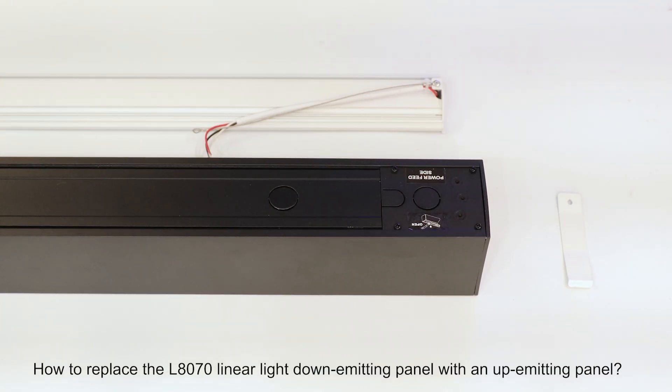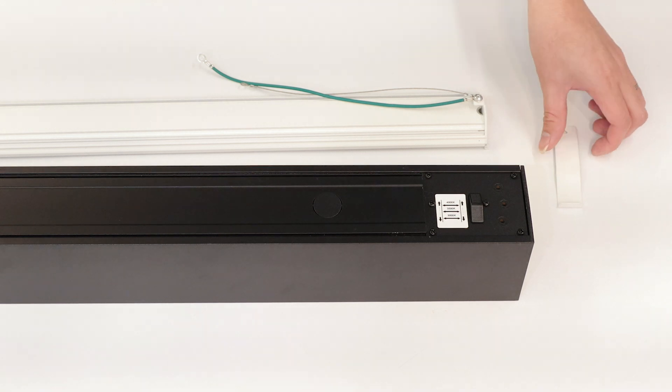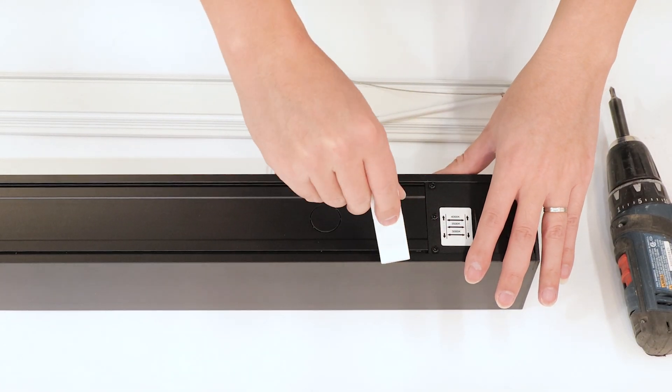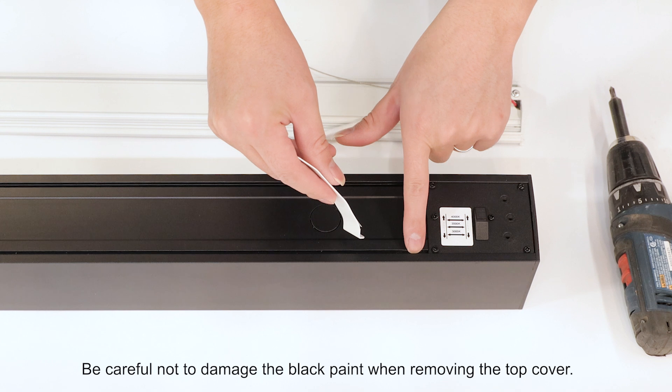How to Replace the L87E Linear Lights Down Emitting Panel with an Up Emitting Panel. Use the uncovering tool that comes with the linear light to remove the upper cover. Be careful not to damage the black paint when removing the top cover.